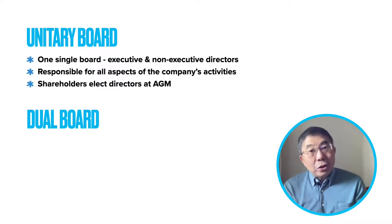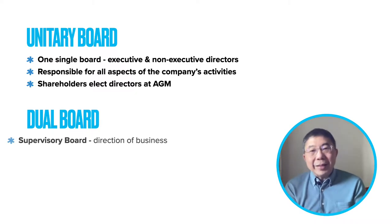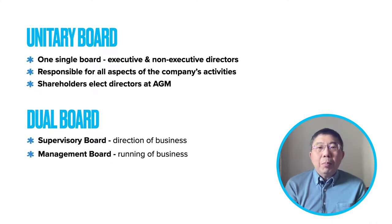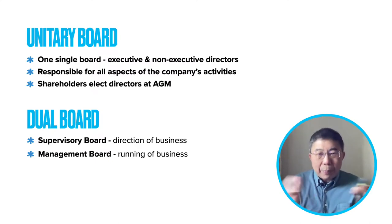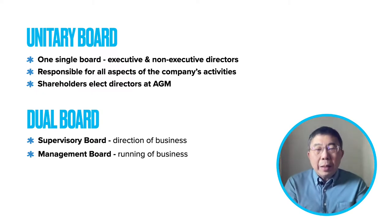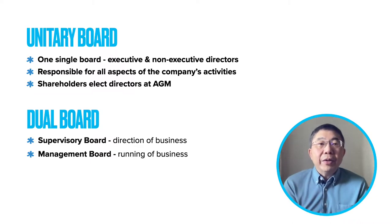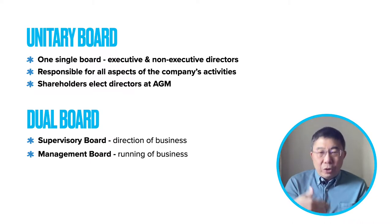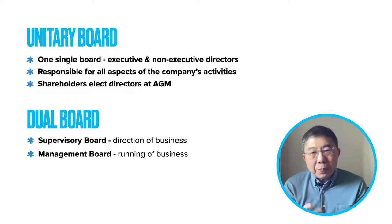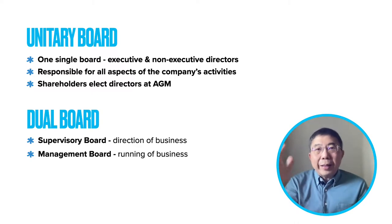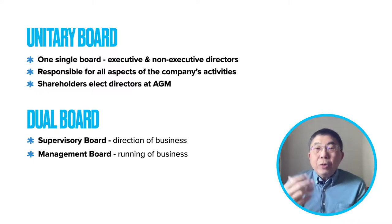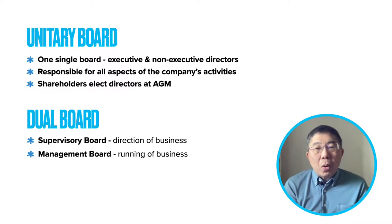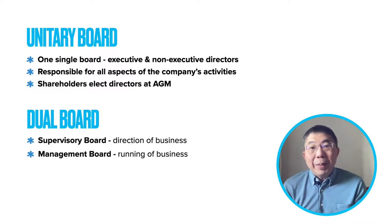Compared to a unitary board, a dual board — as the name suggests — comprises two separate boards within the board of directors. The first is the supervisory board, who are in charge of monitoring the progress of the company and setting the right direction for the business. Then you have the management board, which is tasked to run the business on a day-to-day basis.